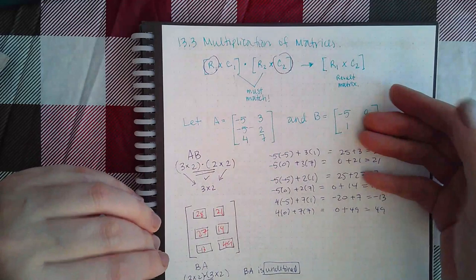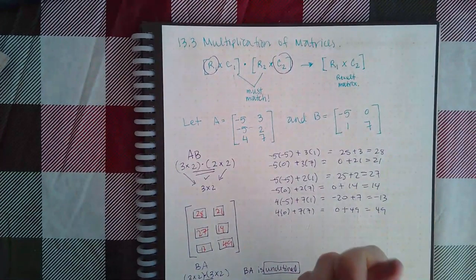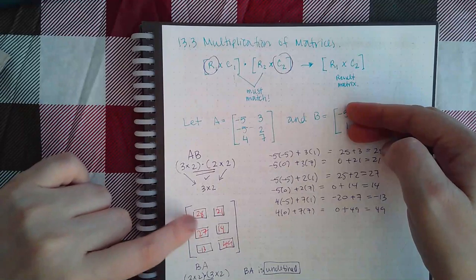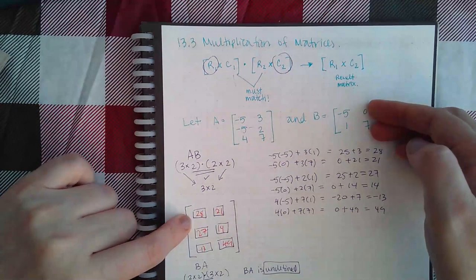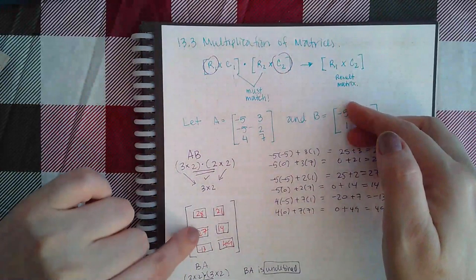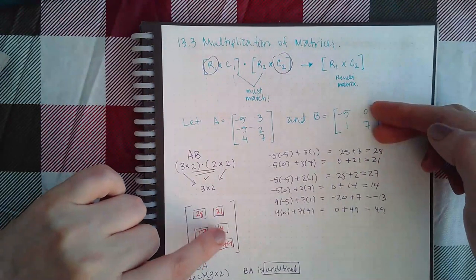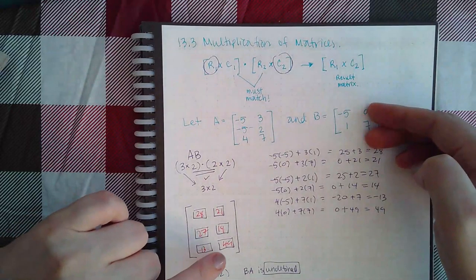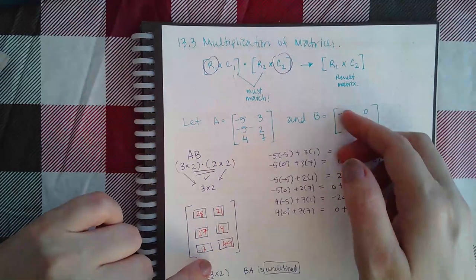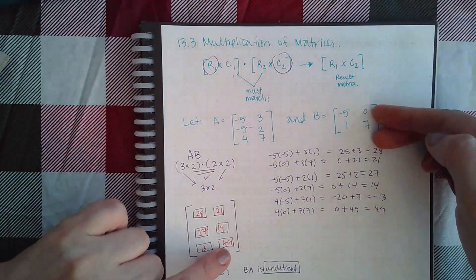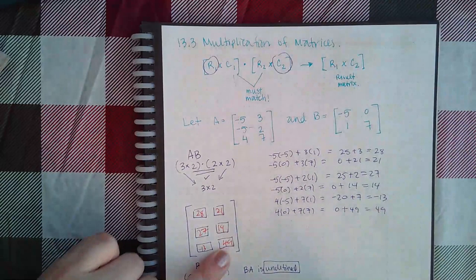Depending on which row and which column you use to get the multiplication, that tells you the position of the result. So here I took the first row and the first column, so first row first column is where that entry will go. First row second column, that's where that answer will go. Second row first column, answer goes here. Second row second column, answer goes there. Third row first column, result goes here. Third row second column, the result goes there.